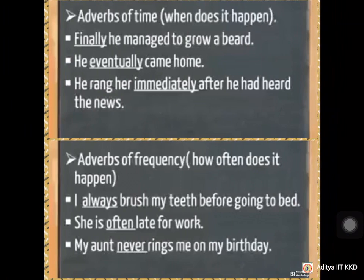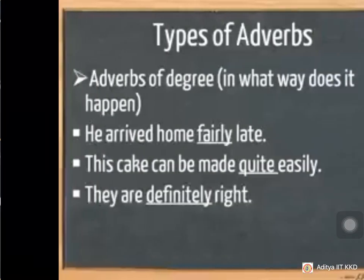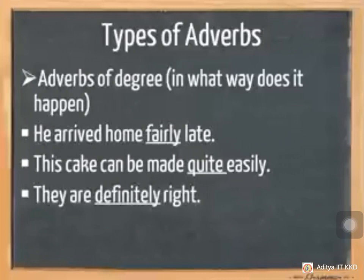Fourth type: adverbs of frequency — how often does it happen, how frequently, how many times? Examples: 'I always brush my teeth before going to bed.' 'She is often late for work.' 'My aunt never rings me on my birthday.' Fifth type: adverbs of degree — to what extent? Examples: 'He arrived home fairly late.' 'This cake can be made quite easily.' 'They are definitely right.'